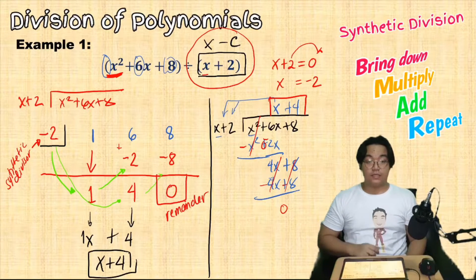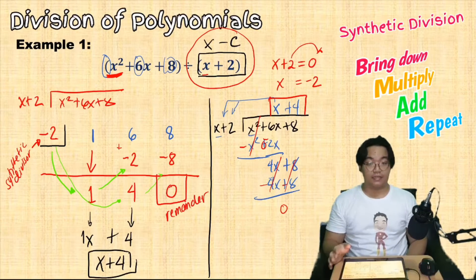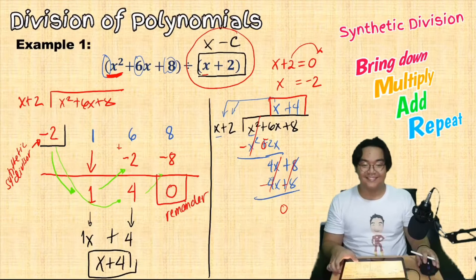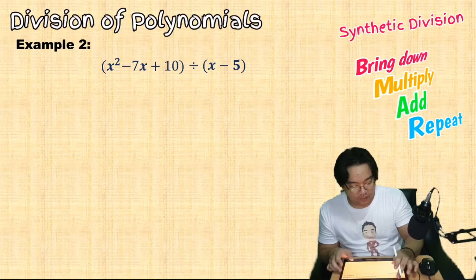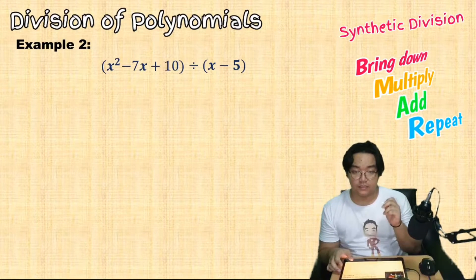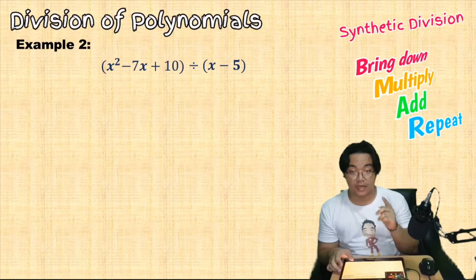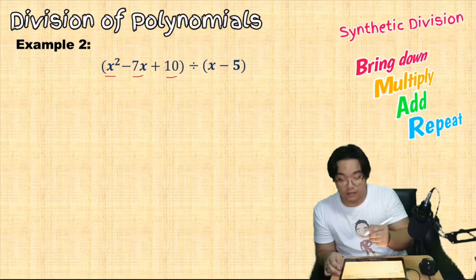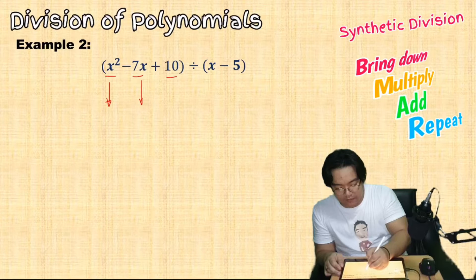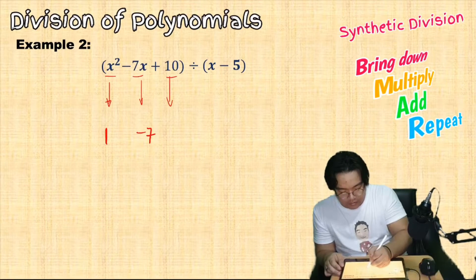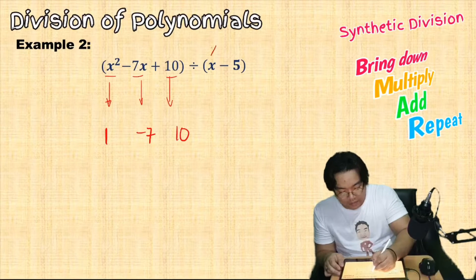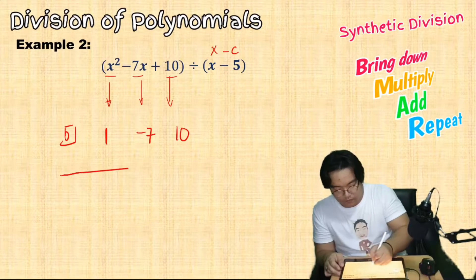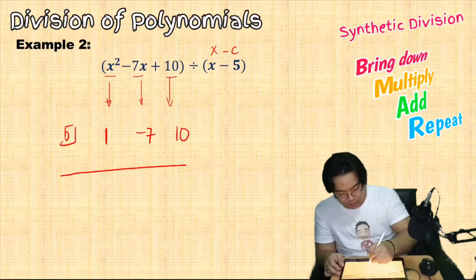Synthetic division is a lot faster than long division, but it has a limitation: it is only easy when your divisor is in the form of x minus C, a linear polynomial. For example two, we apply synthetic division to x squared minus 7x plus 10 divided by x minus 5. The dividend has complete terms — x squared, x, and the constant — so we write coefficients 1, negative 7, and 10. Since x minus C equals x minus 5, our C is 5.